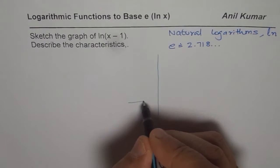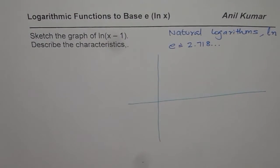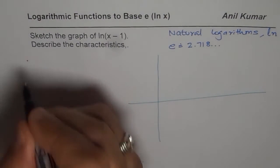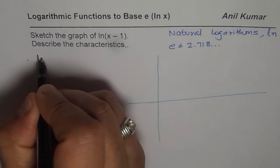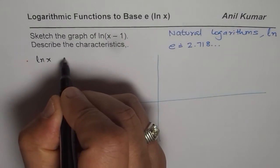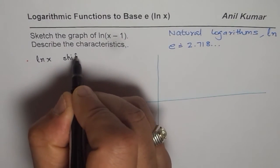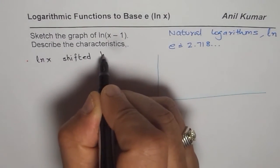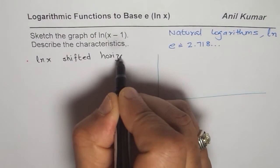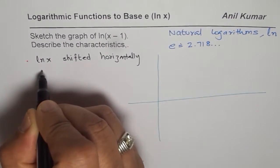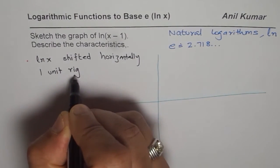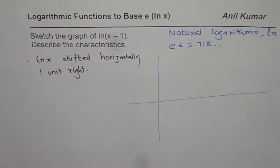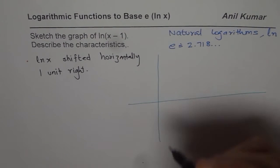What we will do is we will sketch the basic function first and then transform it. As you can see, it is transformation. The transformation in this particular case is ln(x) shifted or transformed horizontally one unit right.